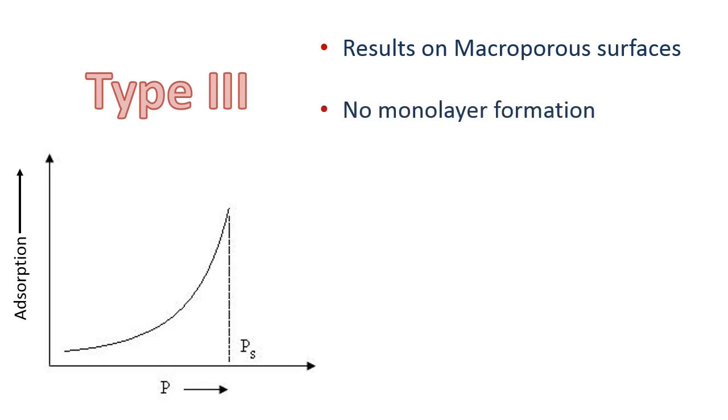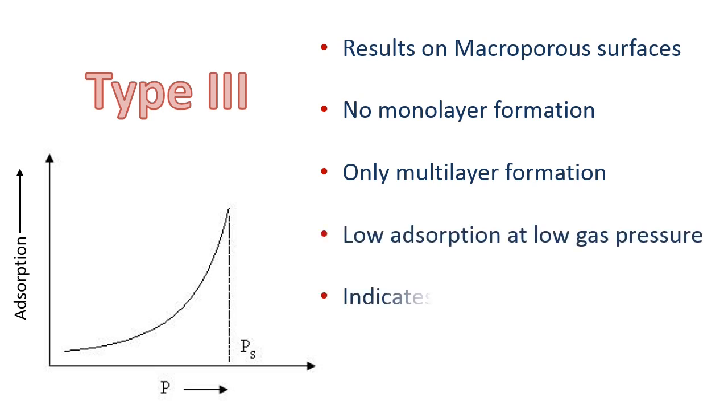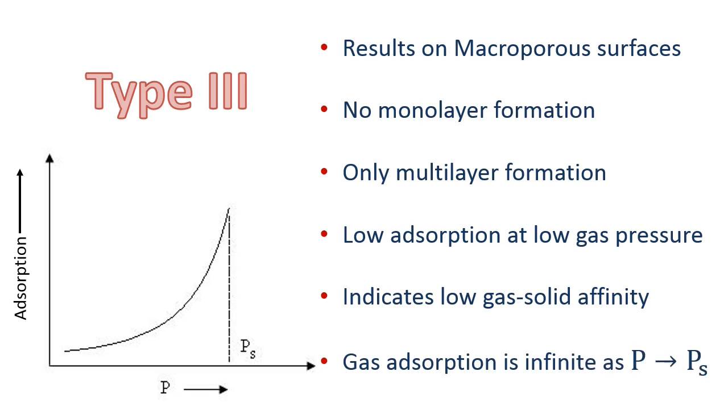Type 3 isotherms are only produced on macropore surfaces. There are no monolayer formations, only multilayers. Low adsorption at low gas pressure indicates low gas-solid affinity. As the pressure approaches the pre-saturation of the gas, the adsorption becomes infinite.